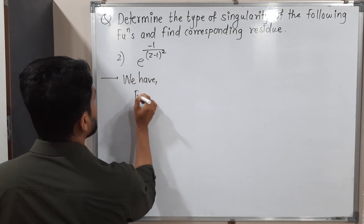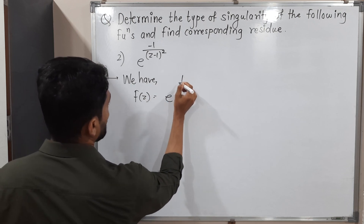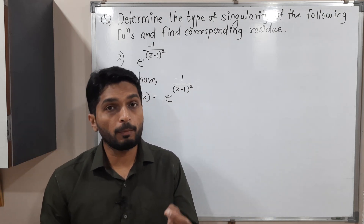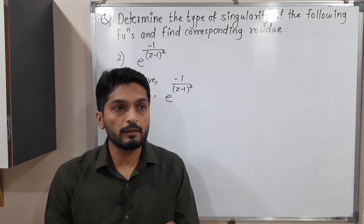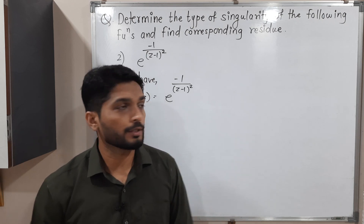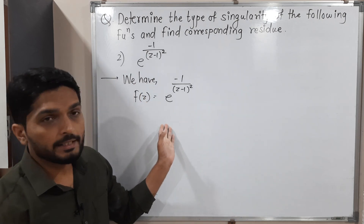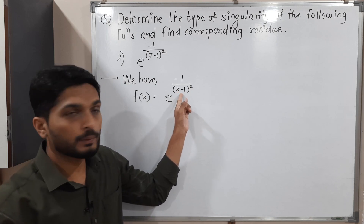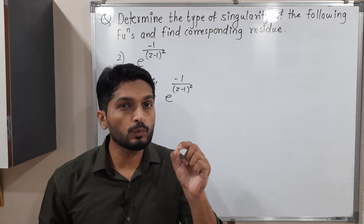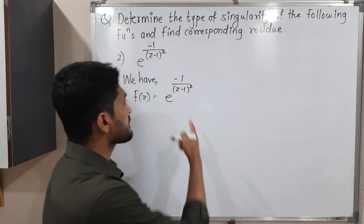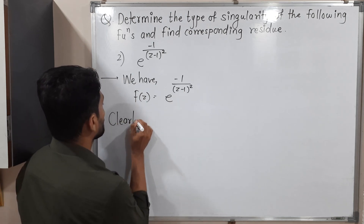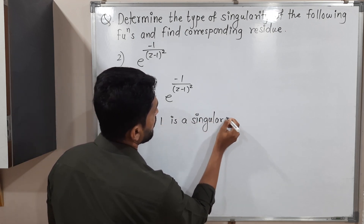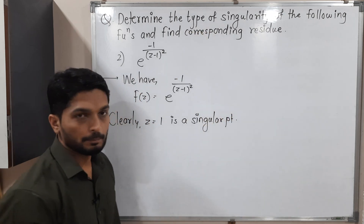The second function is f(z) = e^(−1/(z−1)²). We have to find the singular point. The function has no explicit denominator, but in the power, if we put z = 1, then (z−1) = 0 and the denominator is zero. So z = 1 is a singular point.